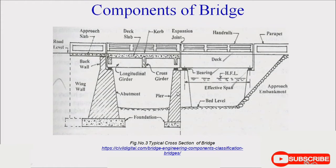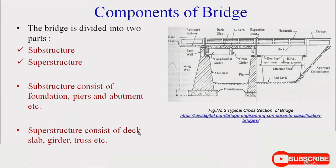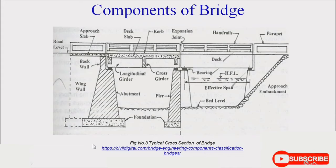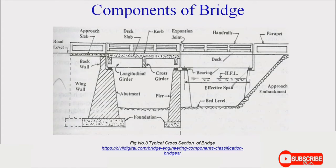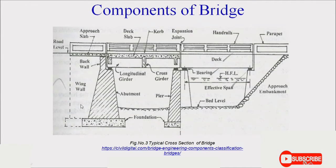These are the common elements of the bridge structure. The bridge is divided into two parts: substructure and superstructure. The substructure consists of foundation, piers, and abutment, etc. The superstructure consists of deck slab, girder, truss, etc. Just as in a building, a bridge is also divided into substructure — the foundation below ground level — and superstructure, which is the portion above ground level.